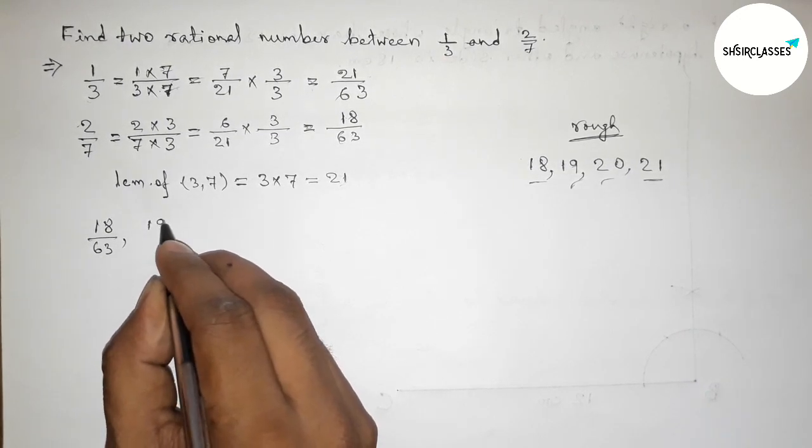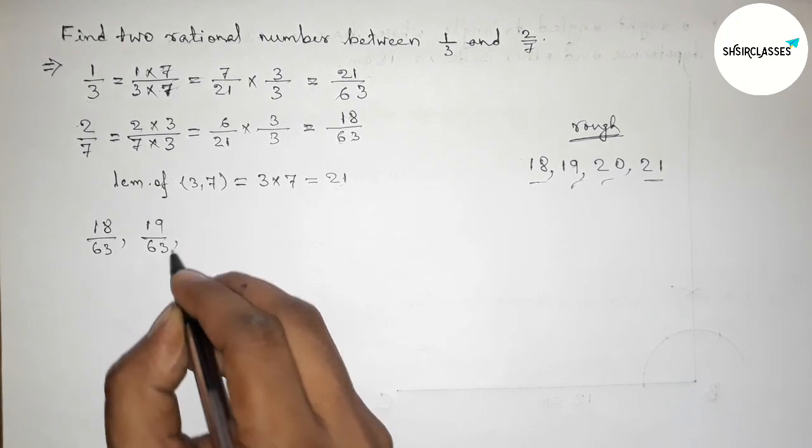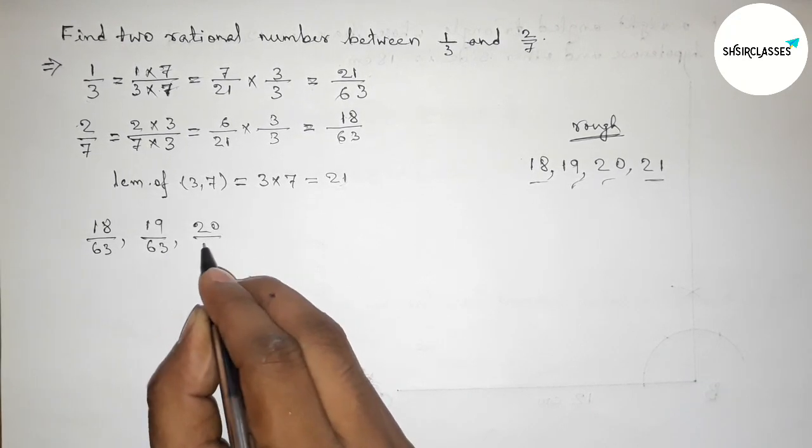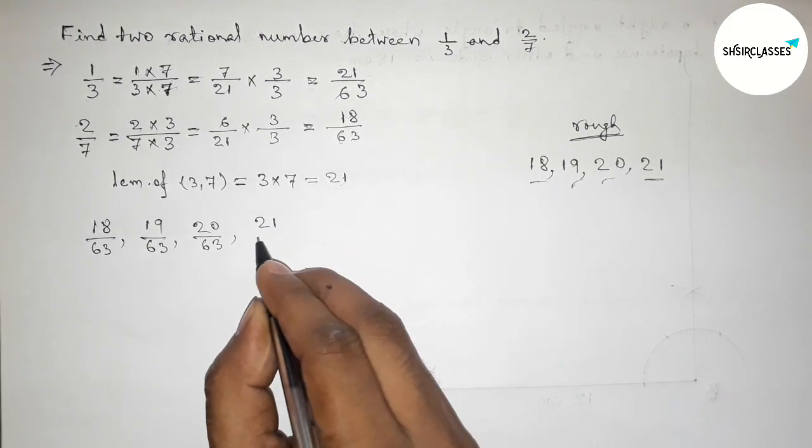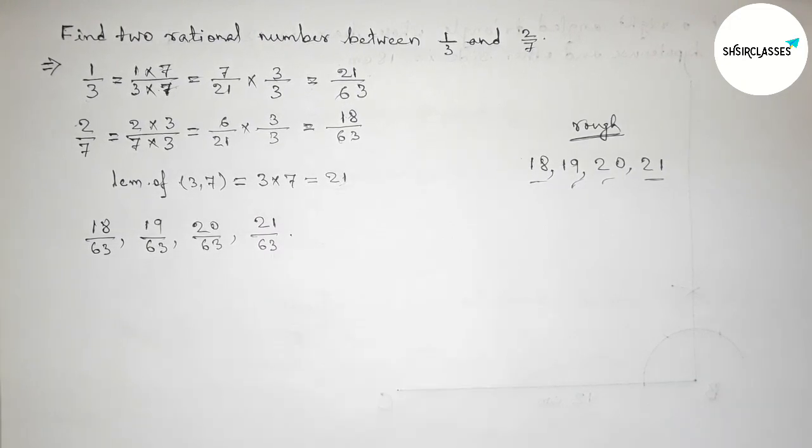18/63, then 19/63, then 20/63, then 21/63. So here between 18/63 and 21/63, these are the two required rational numbers.